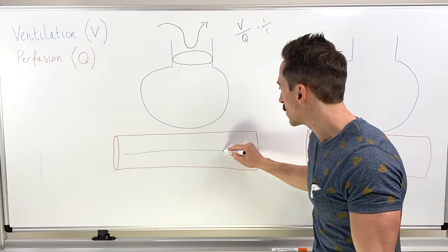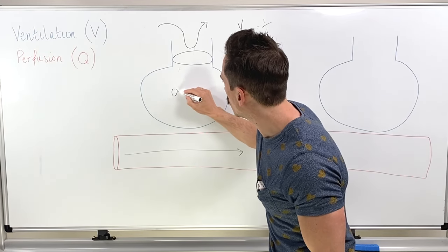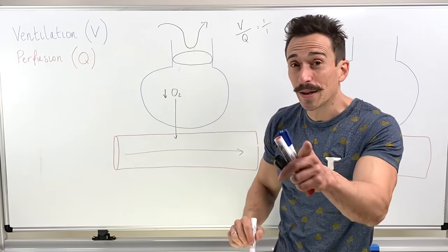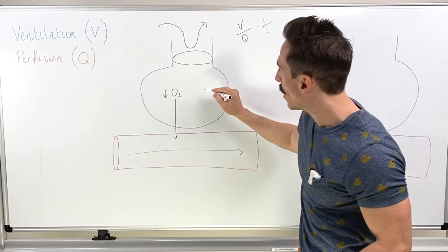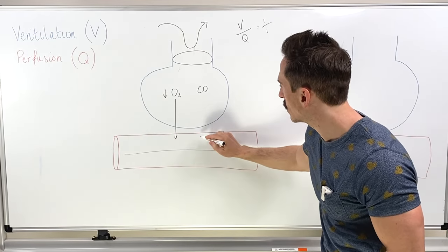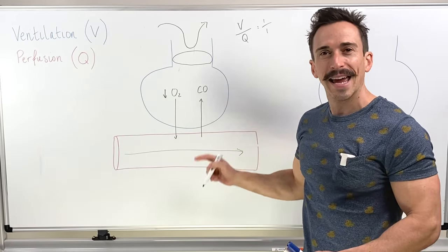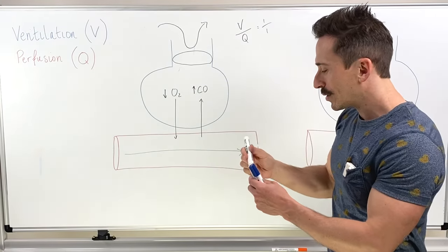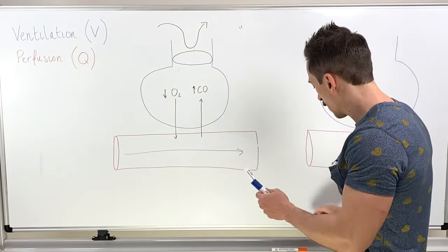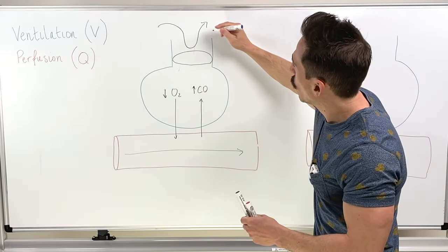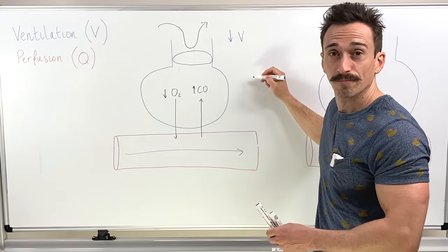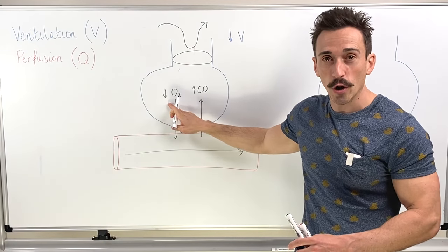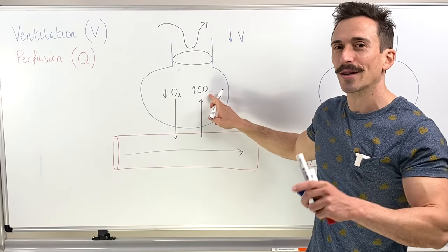The blood is still moving past. That means whatever oxygen is inside the alveolus will jump into the bloodstream, and oxygen levels will drop because it's not getting replenished. What about carbon dioxide levels? The blood is still moving past so it can throw carbon dioxide out into the alveolus. Because it can't escape, carbon dioxide levels go up. So the blockage at the alveolus led to a decrease in ventilation, which led to a decrease in oxygen and an increase in carbon dioxide at the alveolus.